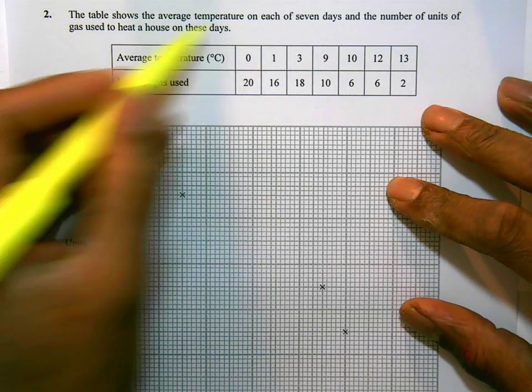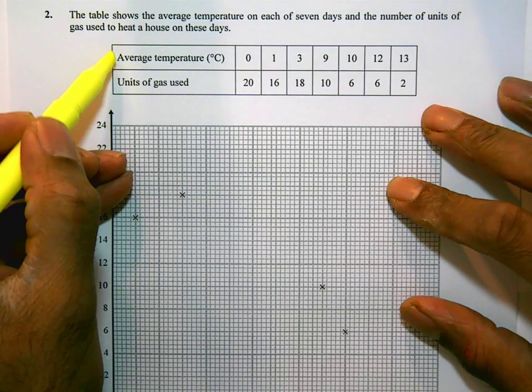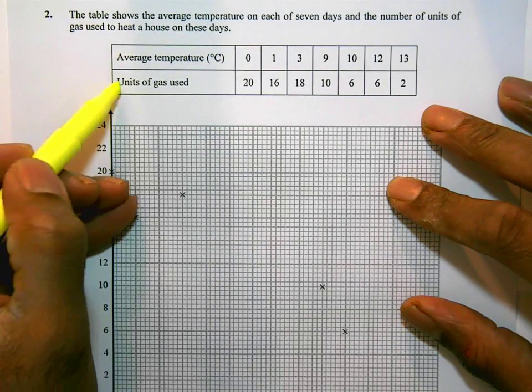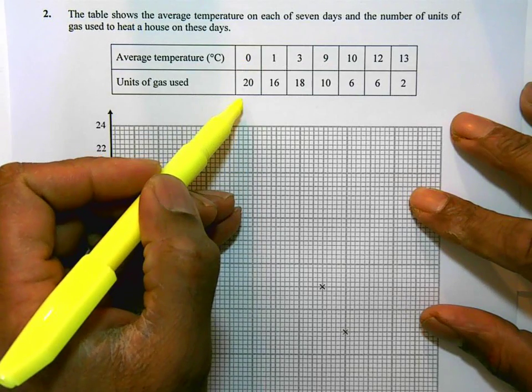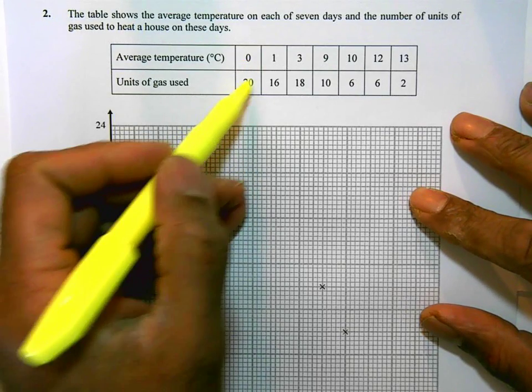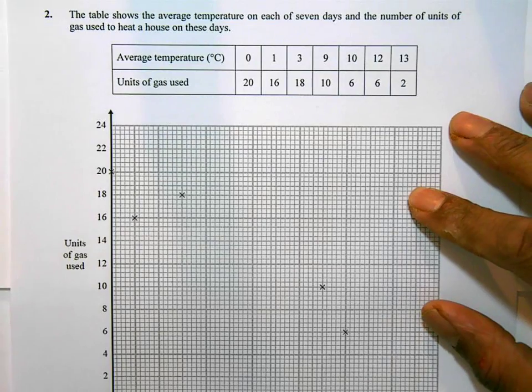So the average temperature, the units of gas used, and they've got a temperature of 0, the units of gas used was 20, and so on. And then we have a graph here with some points plotted already.